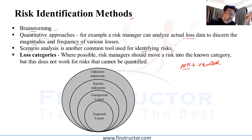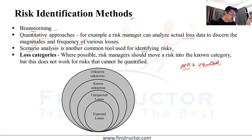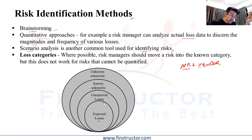For instance, if it is a rainy day, how does that impact sales? Or if it is a holiday or a day with a public event, we can consider various scenarios and estimate the profit or loss. At the end of the identification process, we generally try to place our risks into one of four categories: expected losses, unexpected losses, known unknowns, and unknown unknowns. Expected and unexpected losses can be quantified, whereas unknowns are risks that cannot be quantified.